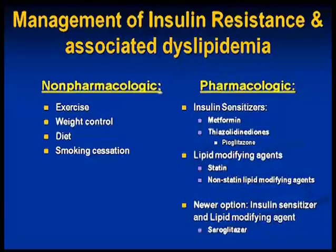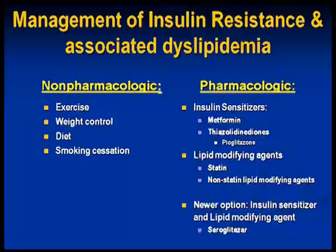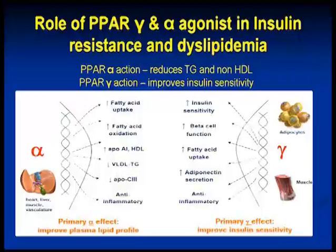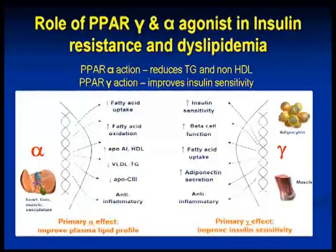Then the lipid-lowering agents like statins, the non-statin lipid modifiers, and the newest option being used for the last year and a half — saruglitazar. The advantages of the role of PPAR gamma and alpha in insulin resistance: alpha has a primary improvement in the lipid profile, whereas gamma's primary effect is on insulin sensitivity.